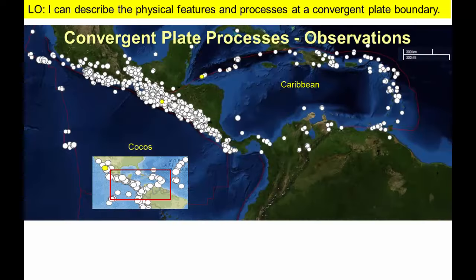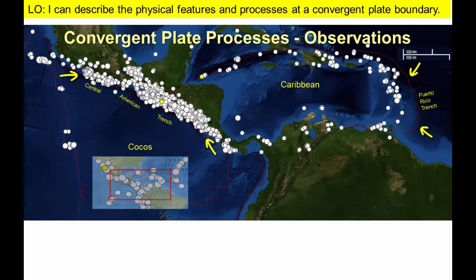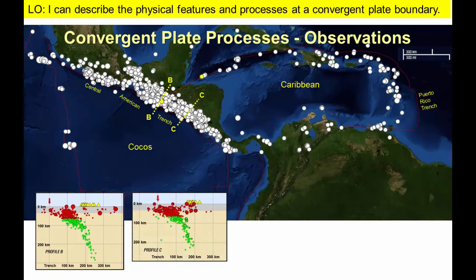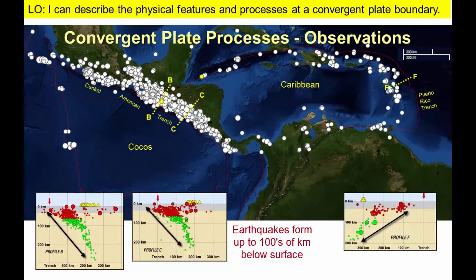In this image we have trenches here and here associated with the convergent boundaries between the Cocos, Caribbean, and North American plates. Our map suggests that there are lots of earthquakes clustering between the trench and the western margin of Central America. But if we look more carefully, what we realize is that most of these earthquakes occur at some depth. We want you to be able to explain the processes that cause the earthquakes to occur and to account for their distribution in sloping zones reaching from the trench down to several hundred kilometers below the surface.